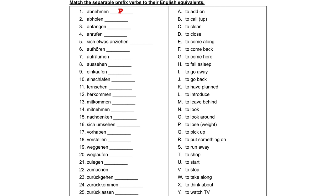Abholen — holen is to get, abholen is to pick up or to get from somewhere else. Anfangen is to start — fangen is to catch, anfangen is to catch on, to hook on to something, meaning to start up. Anrufen is to call up — rufen is to call, as in to scream, and an is like at someone, so to call up. Sich etwas anziehen — I put sich on there because it is usually used with a reflexive pronoun — means to put on clothes or to put something on.